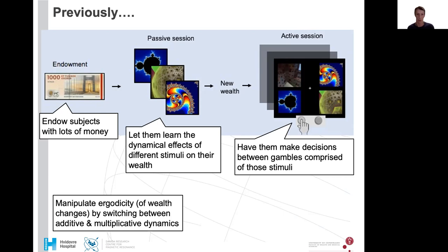Importantly, people came twice on two separate days. And we manipulated the ergodicity of wealth changes and switched between additive and multiplicative dynamics on the two days. So on one day, one stimulus might always add, for example, 100 krona or another one would subtract 80 krona. And on the multiplicative day, one stimulus could multiply with 1.3 and a different one maybe multiplied with 0.8.